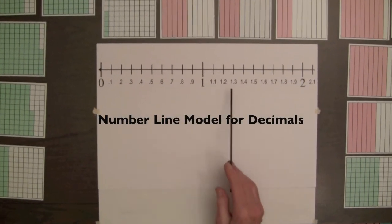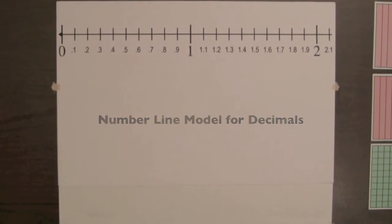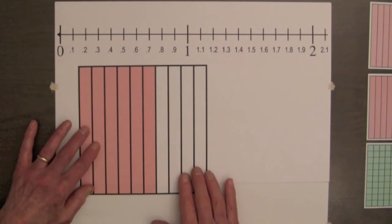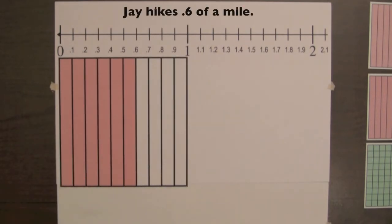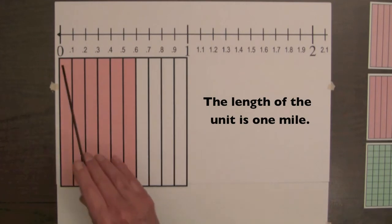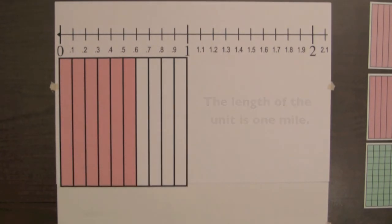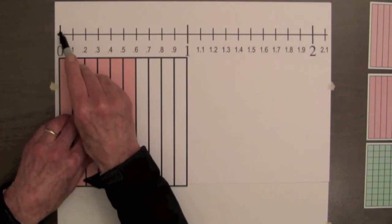The number line is another model for teaching addition of decimals. Six-tenths of this decimal square is shaded, and it corresponds to six-tenths on the number line. Suppose J hikes six-tenths of a mile and stops to rest. If the length from zero to one represents one mile, the line shows that J has hiked six-tenths of a mile, and we can mark his progress by an arrow.